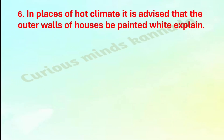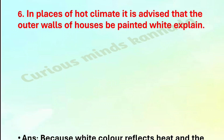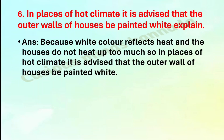Sixth question: in places of hot climate, it is advised that the outer walls of the houses be painted white. Explain. Answer: because white color reflects heat and the houses do not heat up too much. So in places of hot climate, it is advised that the outer walls of the houses be painted white.